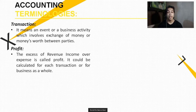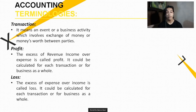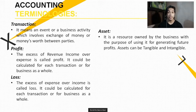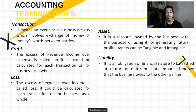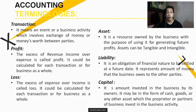Next is profit — the excess of revenue income over expense. It could be calculated for each transaction or business as a whole. Next is loss — the excess of expense over income. It could also be calculated for each transaction or business as a whole. Next is asset — a resource owned by the business with the purpose of using it for generating future profits. Assets can be tangible and intangible. Next is liability — an obligation of financial nature to be settled at a future date; the present amount of money that the business owes to another party. Capital is the amount invested in the business by its owner. It may be in the form of cash, goods, or any other asset which the proprietor or partners invest in the business activity.